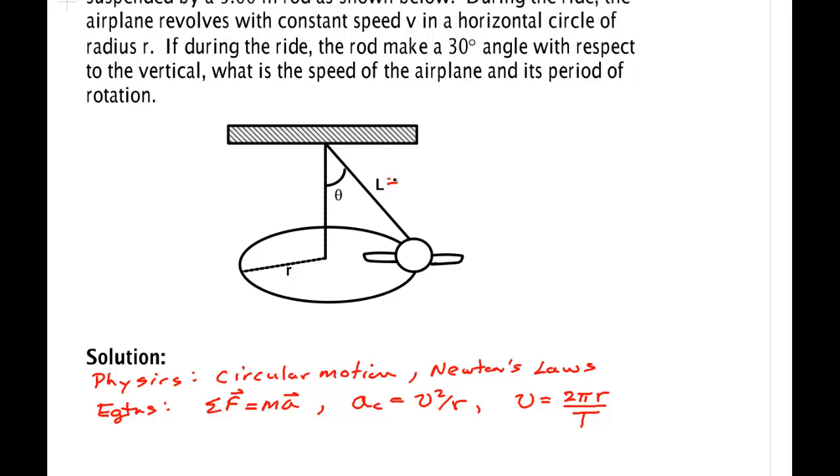Now I know certain other things. I know that this length here is 5 meters. I know that theta is 30 degrees. They did not tell me this radius. I might also want to draw something else that may not be so obvious to you. You have a line going like this, you have L which is 5 meters.